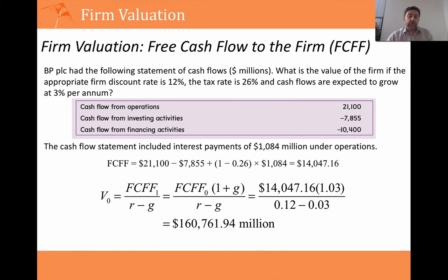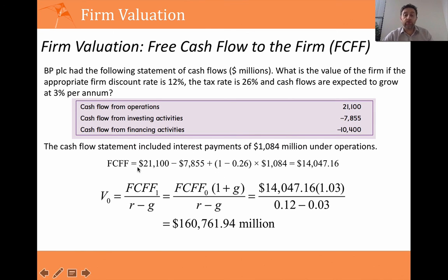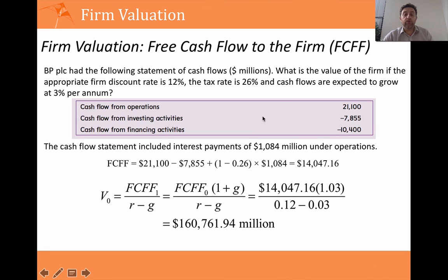In the BP accounts, there were interest payments of $1 billion, so we need to strip that out from operations and add it back in. The free cash flow to the firm is therefore: $21.1 billion from operations, minus $7.8 billion in investing activities, plus the after-tax interest payments. Remember, we need the after-tax cash flow — as covered in the capital budgeting videos. The tax rate is 26%, so after applying that we get a free cash flow to the firm of $14 billion for that year.